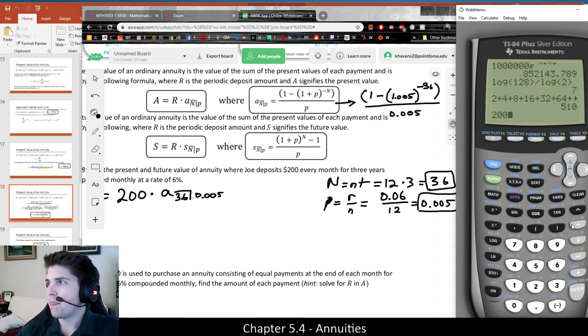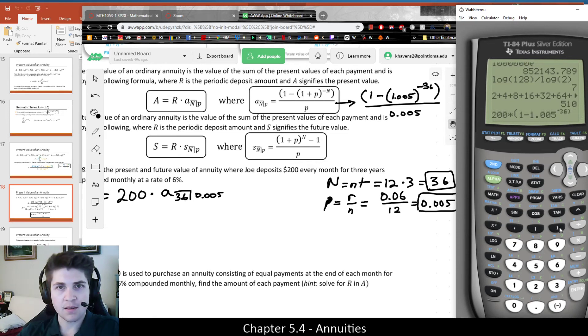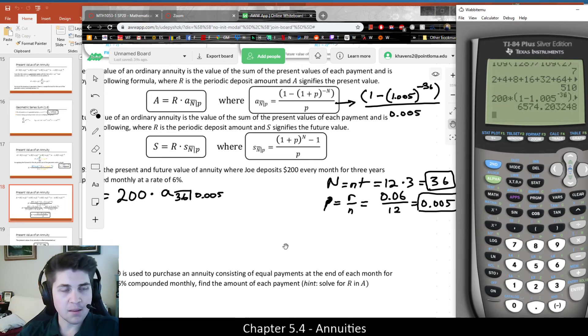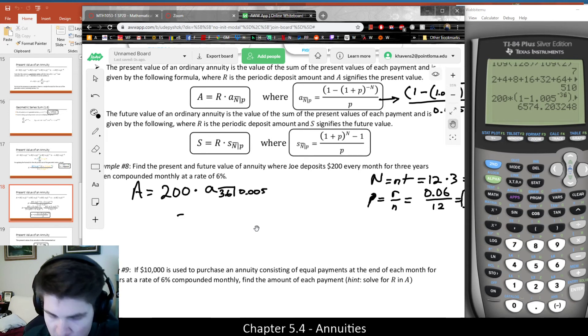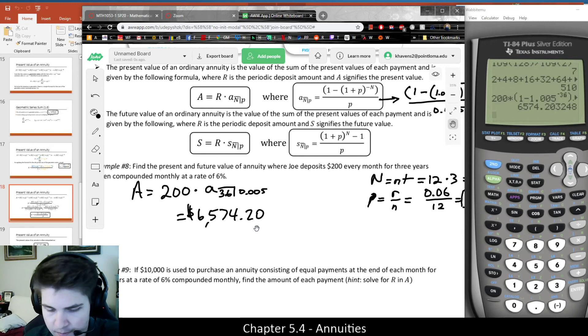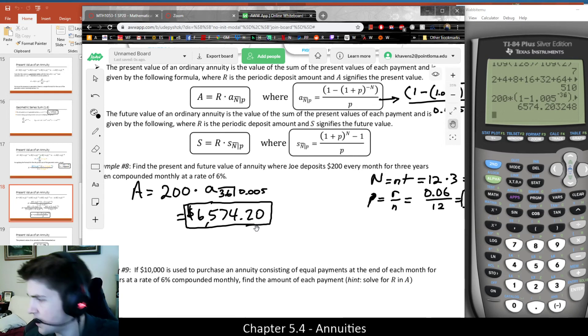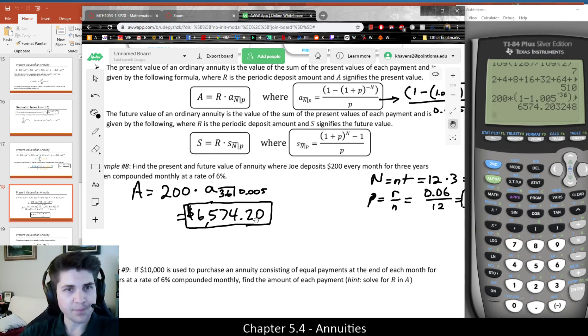We're going to take 200, and it's then going to be multiplied by all of that business, which is 1 minus 1.005 to the negative 36, divided by 0.005. And this should give us the present value of the annuity, which is $6,574.20, rounding to the nearest cent. Let me make that a little bit less ugly. And neat. I'm going to check my notes just to make sure I did not botch anything. Everything seems to be consistent with what I got before.